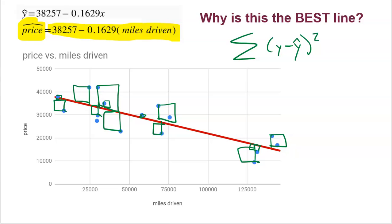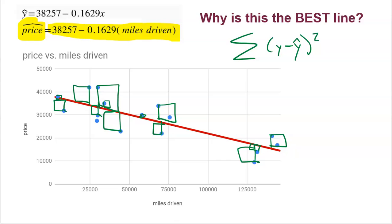You won't need to find all the residuals and square them yourself — the line is built to make this happen automatically. But I want you to understand why it's called the least squares regression line and why it really is the best line. Hopefully that all makes sense — you've learned why we have the least squares regression line and why it got its name.